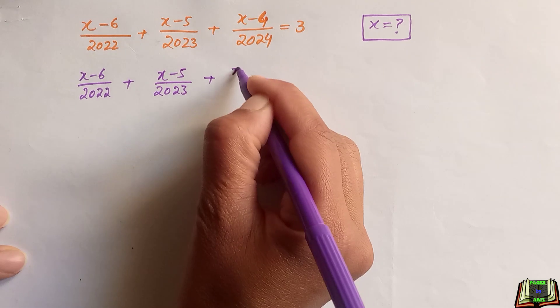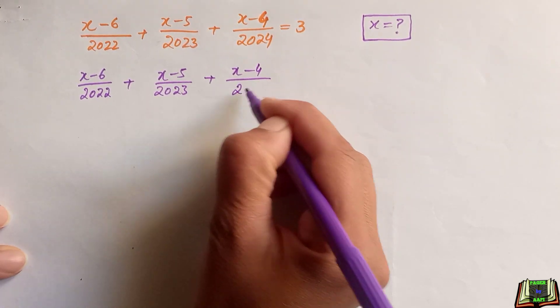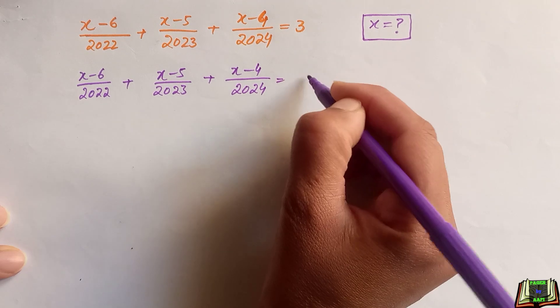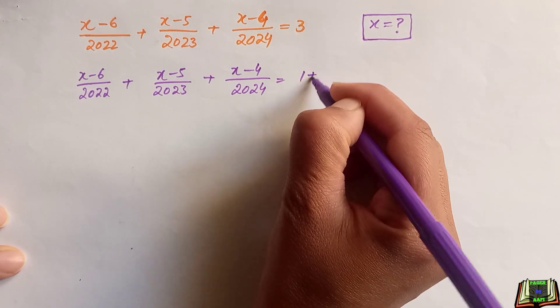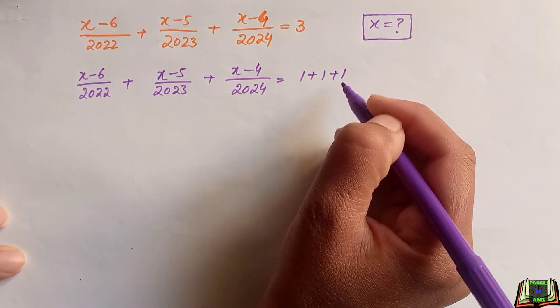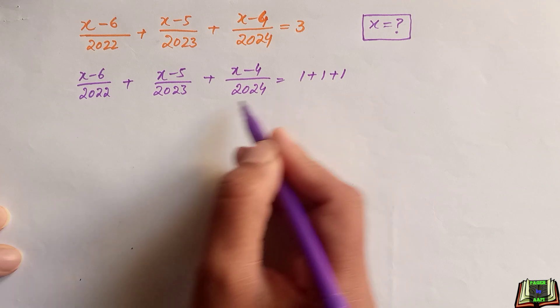The left-hand side will be written as it is, and on the right-hand side this 3 will be written as 1 plus 1 plus 1.